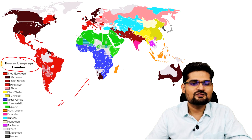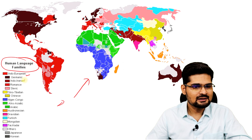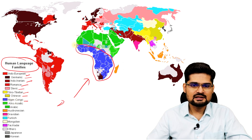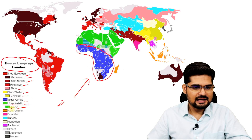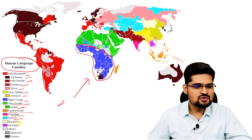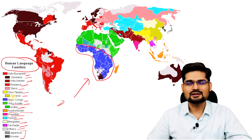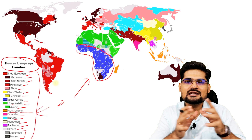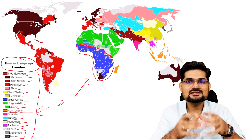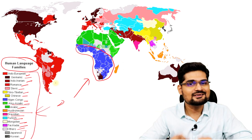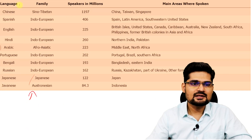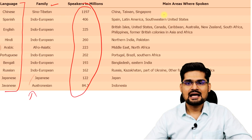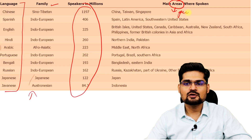Observing this world map, you have human language families across the continents. Indo-European includes Germanic, Indo-Iranian, Romance, and Slavic. Sino-Tibetan includes Chinese. Niger-Congo covers the entire Africa in blue. Afro-Asiatic includes Arabic. Then Austro-Asiatic, Dravidian, Turkish, Mongolian, Tai-Kadai, and others like Japanese and Korean. These various language groups create an interesting colorful pattern — the world is diverse in terms of language and spatial pattern.